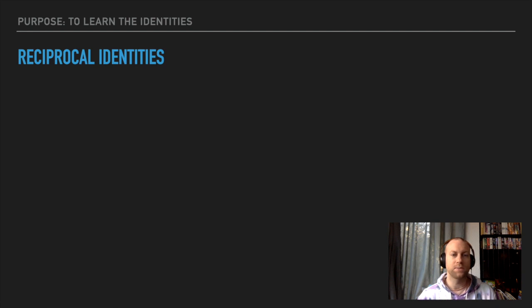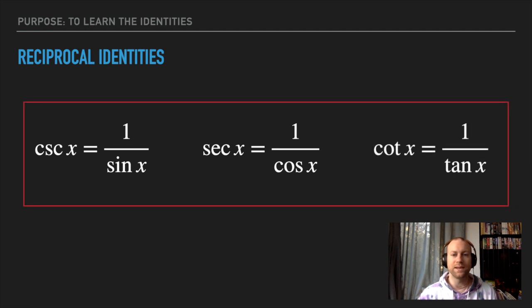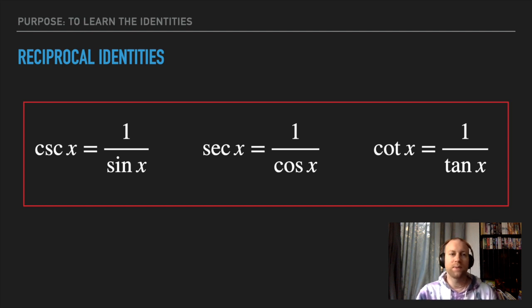Starting off — reciprocal identities. These ones you actually already know. Your reciprocal identities are cosecant, secant, and cotangent. I'm not going to spend a lot of time going through these, but these are what those are. Don't worry — I'll give these on your formula sheet.